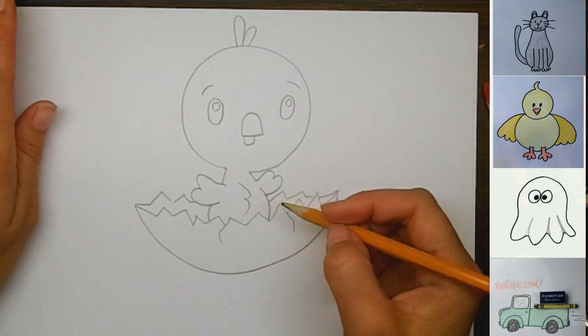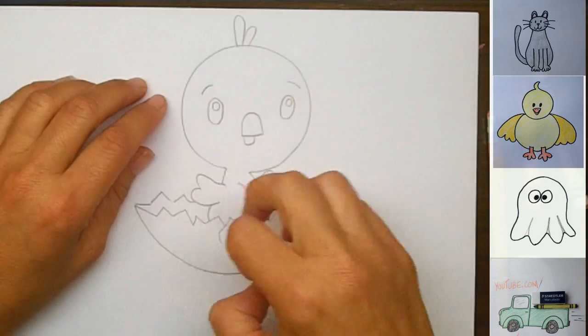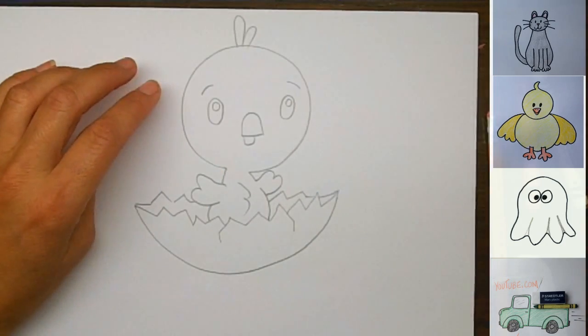All right, so now I'm going to color in my baby bird. And first I'm going to trace the black, and then I'm going to outline with black, and then I'm going to fill in with colors.